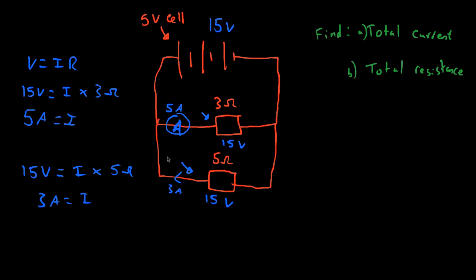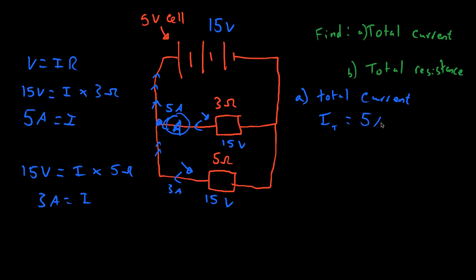So your current through this branch is 3 amps and your current going through the other branch is 5 amps. When they meet and go back they add up, so you have a total current. For part A, total current I-total is equal to the sum of the individual currents, which is 5 amps plus 3 amps, equals 8 amps.